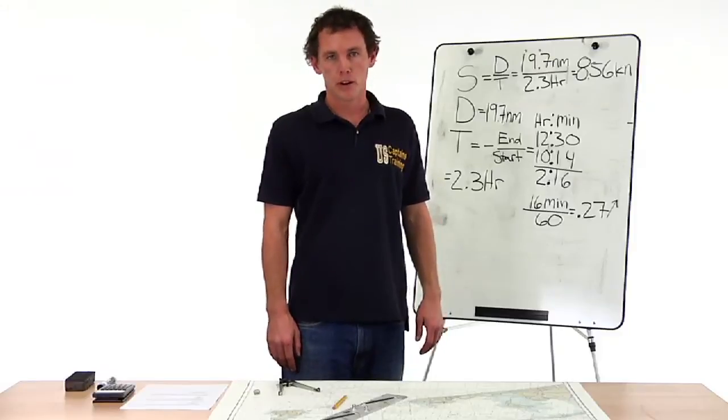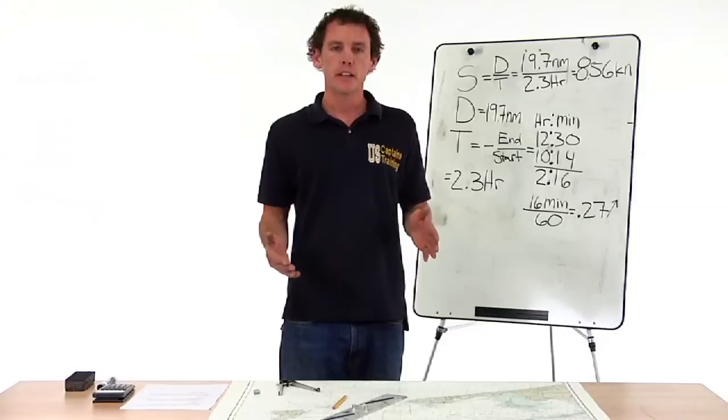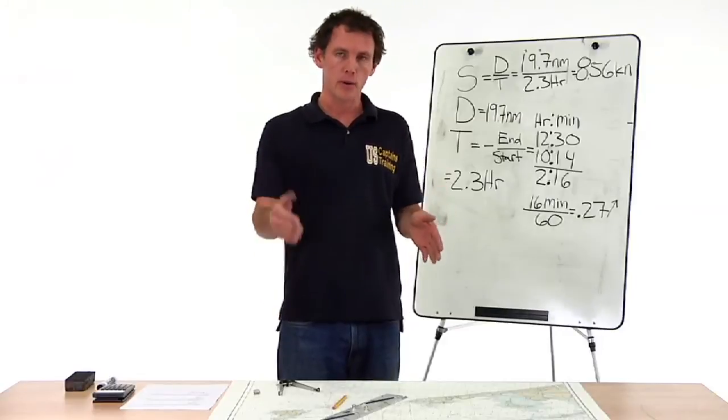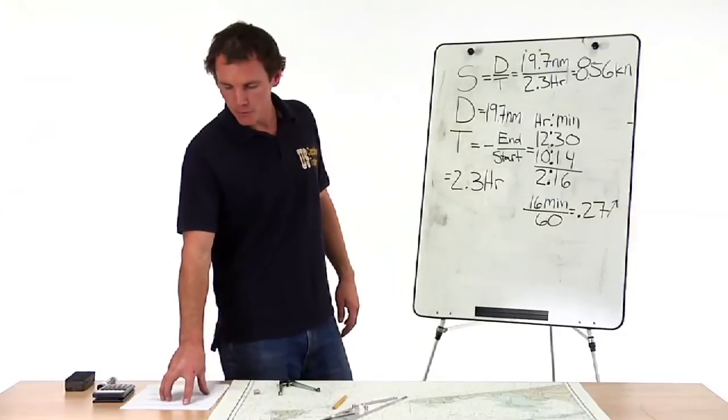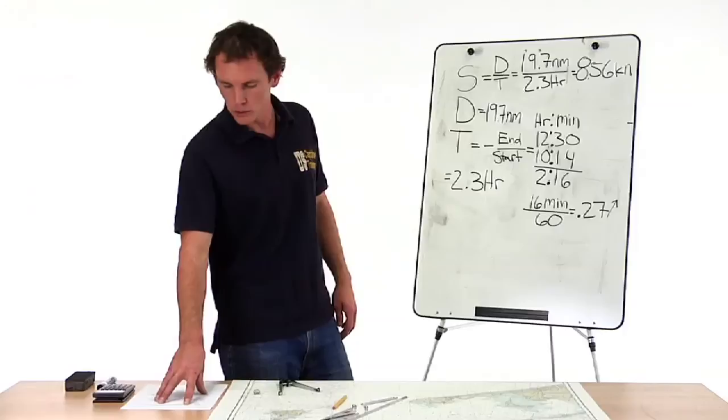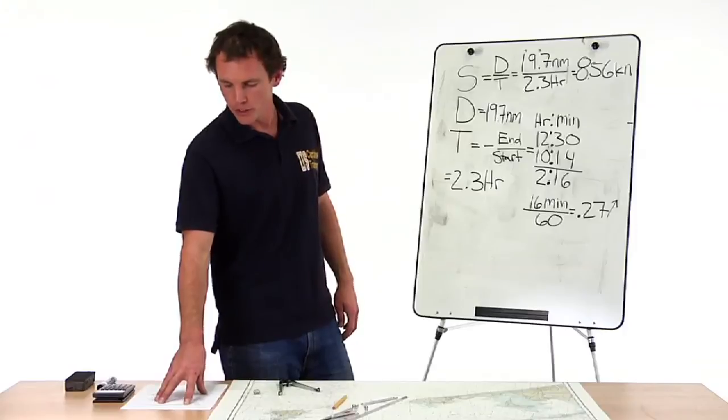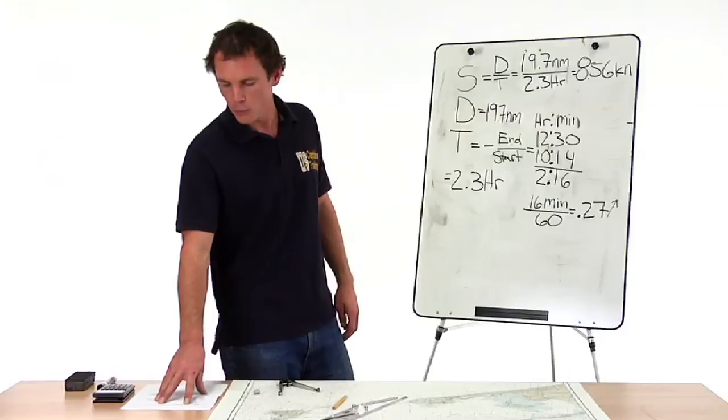This is a speed made good problem. We're calculating the average speed between point A and point B. The problem says at 1014 you depart the entrance to Lake Montauk with light 1 close aboard. At 1230 your position is latitude 4120 north, longitude 7140 west. What is the speed made good?